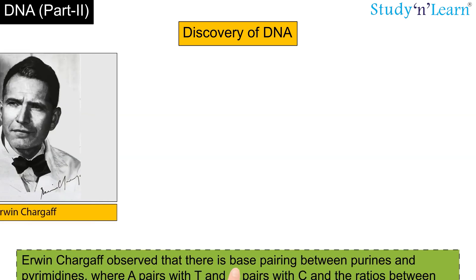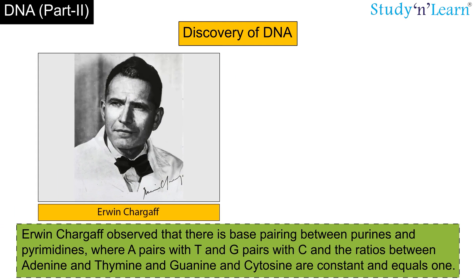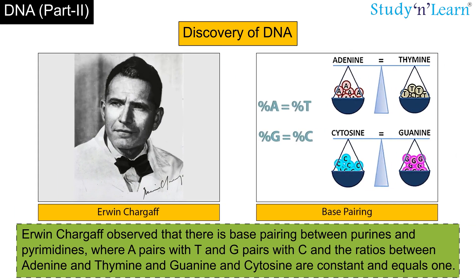Erwin Chargaff observed that there is base pairing between purines and pyrimidines, where A pairs with T and G pairs with C, and the ratios between adenine and thymine, and guanine and cytosine, are constant and equal one another.